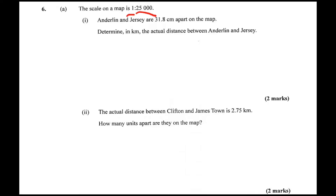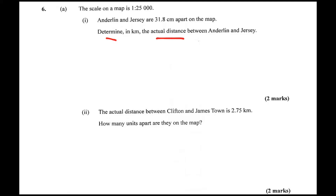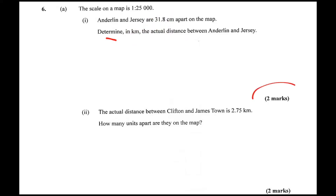The scale on the map is one to twenty-five thousand, and Lin and Jersey are thirty-one centimeters apart on the map. So if you want to get the actual distance, you have to multiply by twenty-five thousand. You'll get the distance in centimeters, but they want kilometers. So you need to change the centimeters — you get two kilometers by using your conversion. That's two marks: one for multiplying by twenty-five thousand and one for changing centimeters to kilometers.